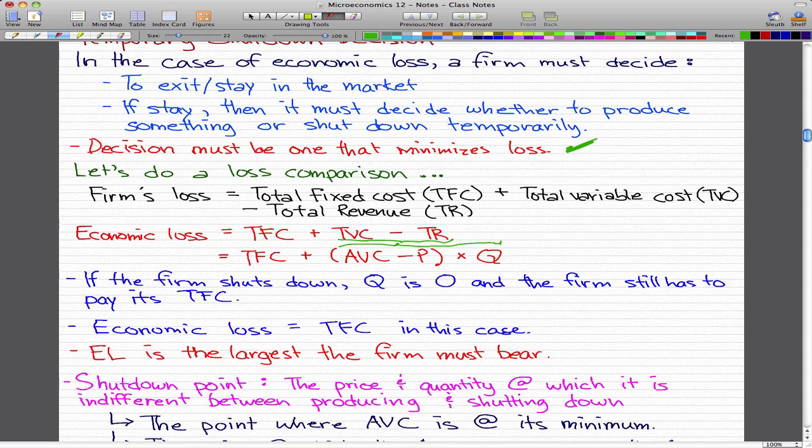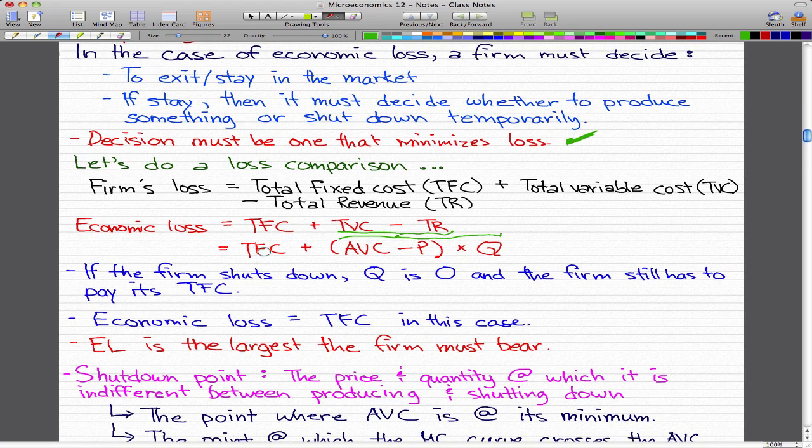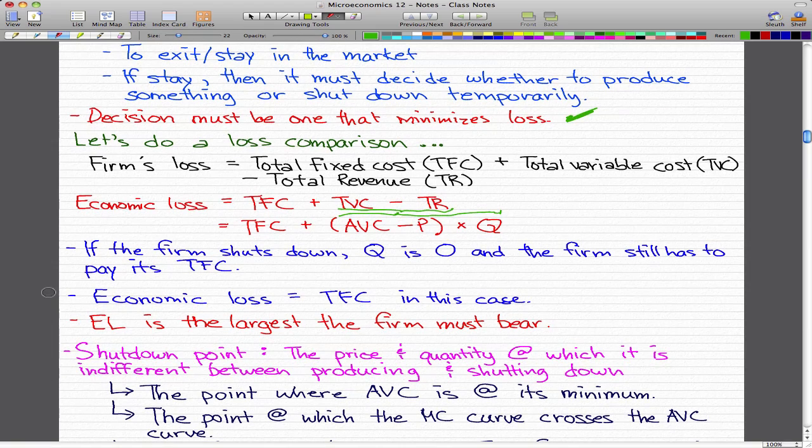If the firm shuts down, then the quantity is zero, so we're not selling anything. All the firm has to pay is its total fixed cost because that is the cost that we have to pay no matter what, no matter whether we are in operation or not. In this case, the economic loss is equal to the total fixed cost. This economic loss is the largest that the firm must bear.